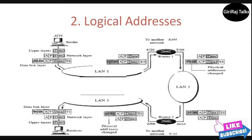For example, this diagram shows a part of an internet with two routers connecting three LANs. Each device, whether a computer or router, has a pair of addresses — logical and physical. Each computer is connected to only one link, therefore has only one pair of addresses. Each router, however, is connected to three networks (only two are shown), so each router has three pairs of addresses, one for each connection. Although it is obvious that each router must have a separate physical address for each connection, it may not be obvious why it also needs a logical address for each connection.